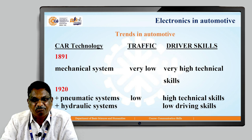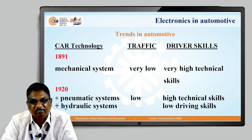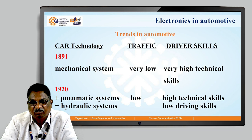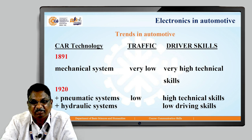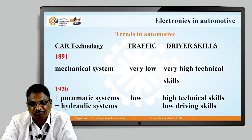Trends in automotive are categorized into three columns: car technology, traffic, and driver skills. Initially very high technical skills were required for the driver. In 1891, car technology was mechanical with very low traffic but very high technical skills required. In 1920, car technology involved pneumatic and hydraulic systems; traffic was still very low but high technical skills and low driving skills were required.